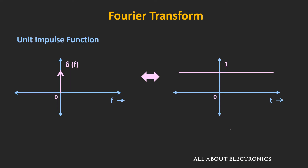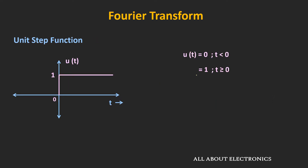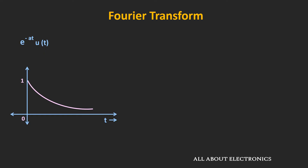Then another very useful function is the unit step function. The value of this unit step function is 1 when t is greater than or equal to zero, and this function is zero for t less than zero. We will see the Fourier transform of this unit step function a little later. But when a continuous time function is multiplied with this unit step function, then that particular function exists only for t greater than or equal to zero. And one such function is the exponential function, where a is greater than zero. When we multiply e to the power minus at with this unit step function, then this function exists only for t greater than or equal to zero.